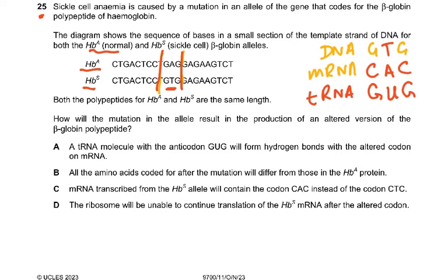This is the DNA. It says in the question, this is the DNA. So if the DNA is GTG, mRNA will be CAC and tRNA will be GUG. So A is correct — a tRNA molecule with the anticodon GUG will form hydrogen bonds with the altered codon of the mRNA. Then it says all the amino acids coded after the mutation will differ — no, that's wrong, only this one will be wrong. mRNA described will contain the codon CAC instead of codon CTC — mRNA cannot have T. RNA always has U, it doesn't have T.